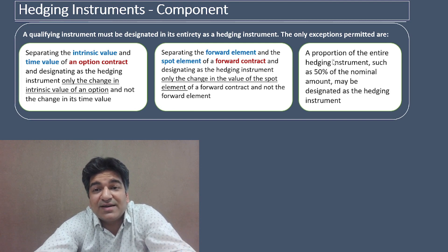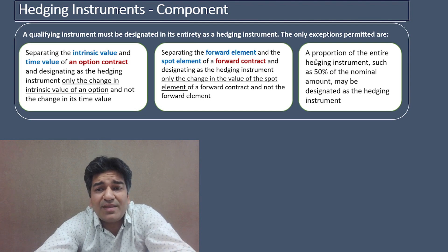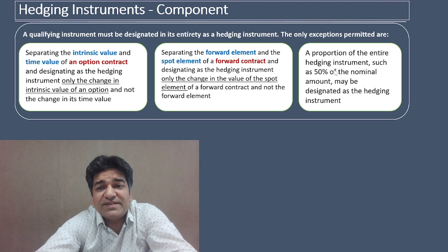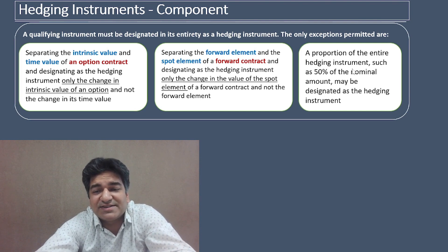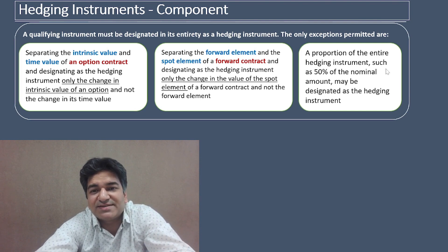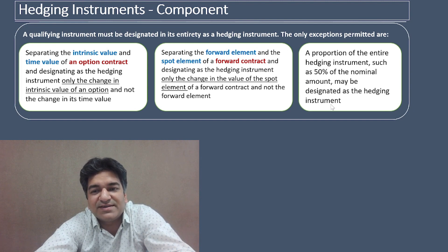Exception number three as defined by Ind AS 109: a proportion of the entire hedging instrument — such as 50% of the nominal amount — may be designated as the hedging instrument.